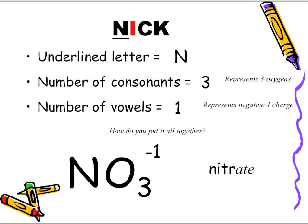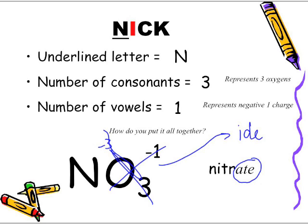Notice how the name for the non-metal used to be IDE — that was the IDE ending representing the non-metal. But with polyatomics, A-T-E is used instead, as in "ate" from the phrase. Normally we'd have nitride (without oxygen), which carries a negative three charge according to the periodic table. But nitrate is NO3 with a negative one charge.